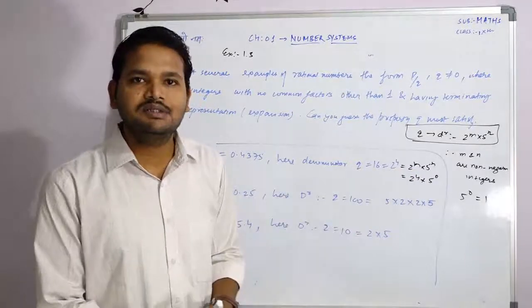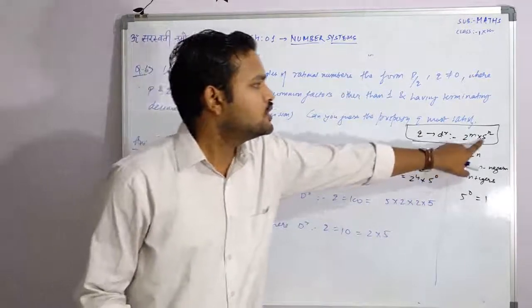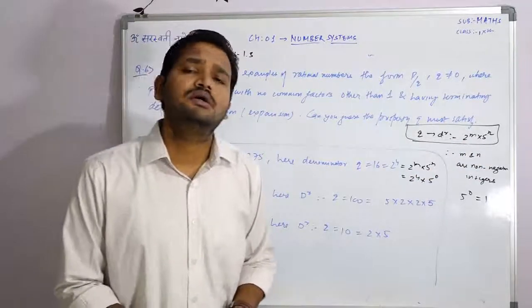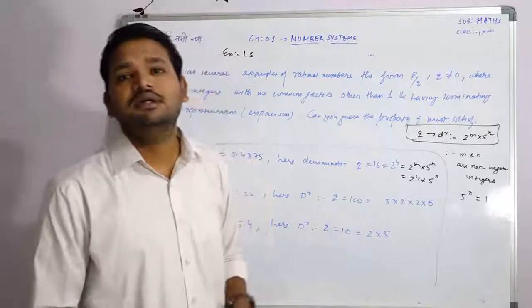It can be expressed in the form of 2 raised to M into 5 raised to n. If this happens, what will be the rational number? What will be the decimal expansion? Terminating nature.